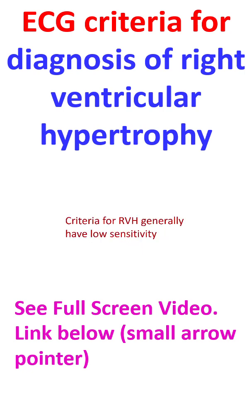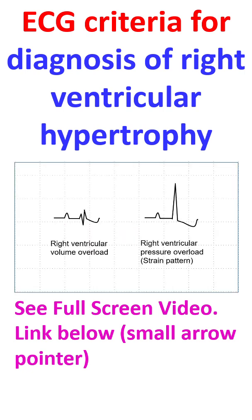Criteria for RVH generally have low sensitivity. Higher sensitivity is noted in congenital heart disease, while intermediate sensitivity is noted in adults with acquired heart disease and primary pulmonary hypertension. Least sensitivity is noted in chronic lung disease. Incomplete RBBB pattern in right ventricular volume overload and dominant R wave in right precordial leads in right ventricular pressure overload are well known.